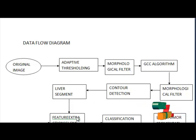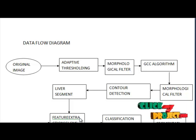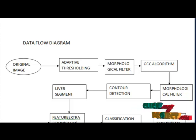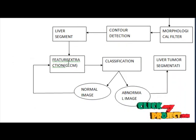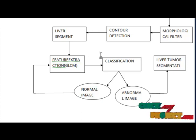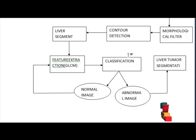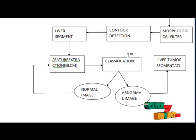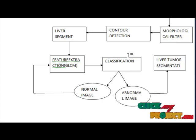The next step is feature extraction using GLCM. GLCM calculates the selected features using only the values in the matrix. Several statistical measures are derived using different formulas. These statistics provide information about the texture of an image such as angular second moment, entropy, contrast, inverse difference moment, correlation, sum of squares, sum average, variance, and entropy, all calculated for the texture image.